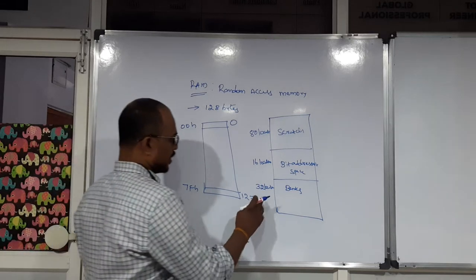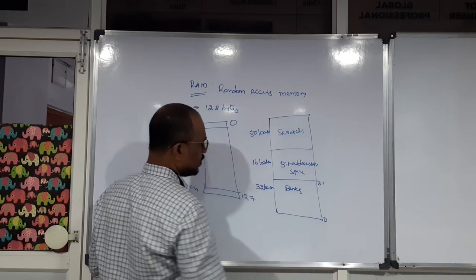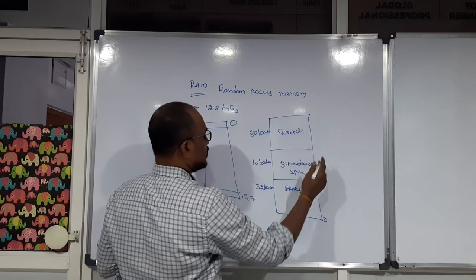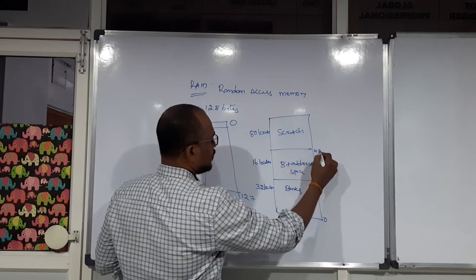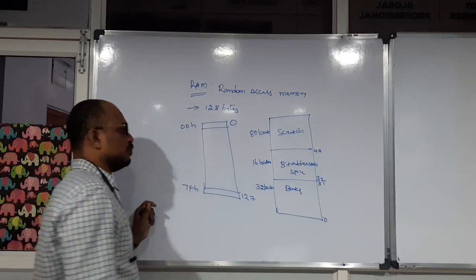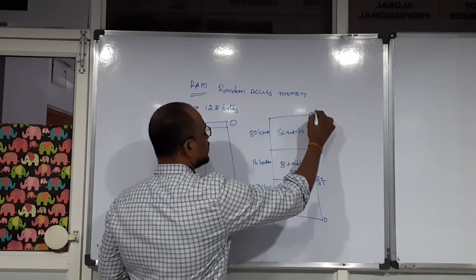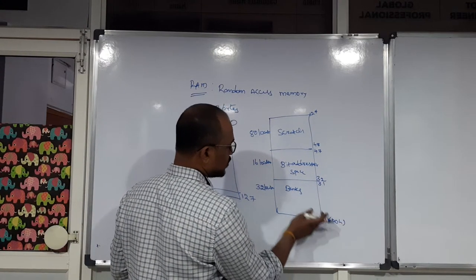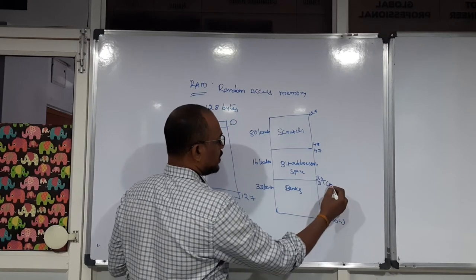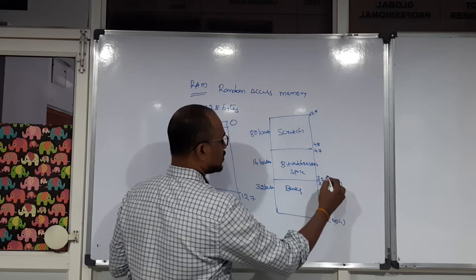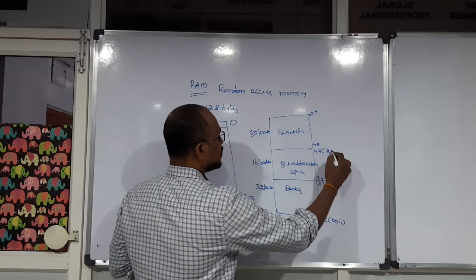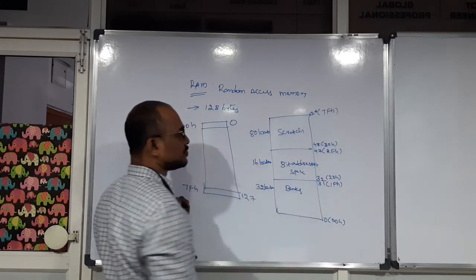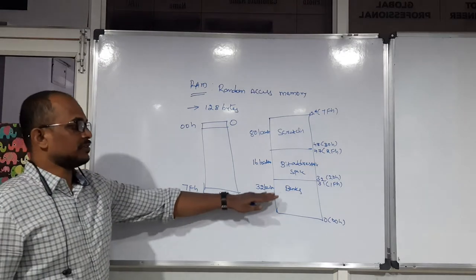Coming to Banks: 32 locations means addresses 0 to 31 in decimal. The start address of Bit Addressable Space is 32, and 32 plus 16 equals 47, which is the end of Bit Addressable Space. From 48 to 127 is the Scratch Pad Memory range. In hexadecimal: Banks span 00H to 1FH, Bit Addressable Space spans 20H to 2FH, and Scratch Pad Memory spans 30H to 7FH.